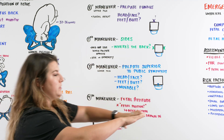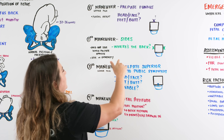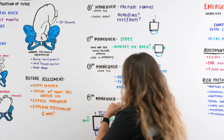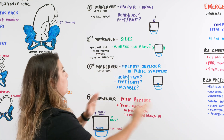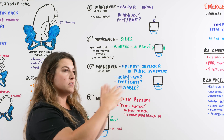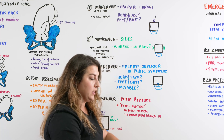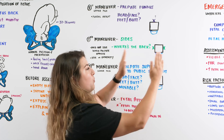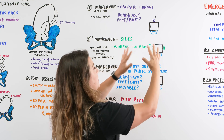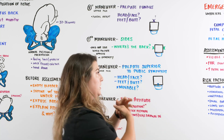For the second maneuver, we move down to the sides of the abdomen and assess both sides. Our hands are placed on either side, and we're trying to determine what side the back is on — is baby laying this way or that way? You hold one side firm and palpate the other, then hold the other side firm and palpate along. We're feeling for which side is the back — smooth and firm — versus which side feels lumpy and bumpy, like legs curled up or a head with the chin tucked.